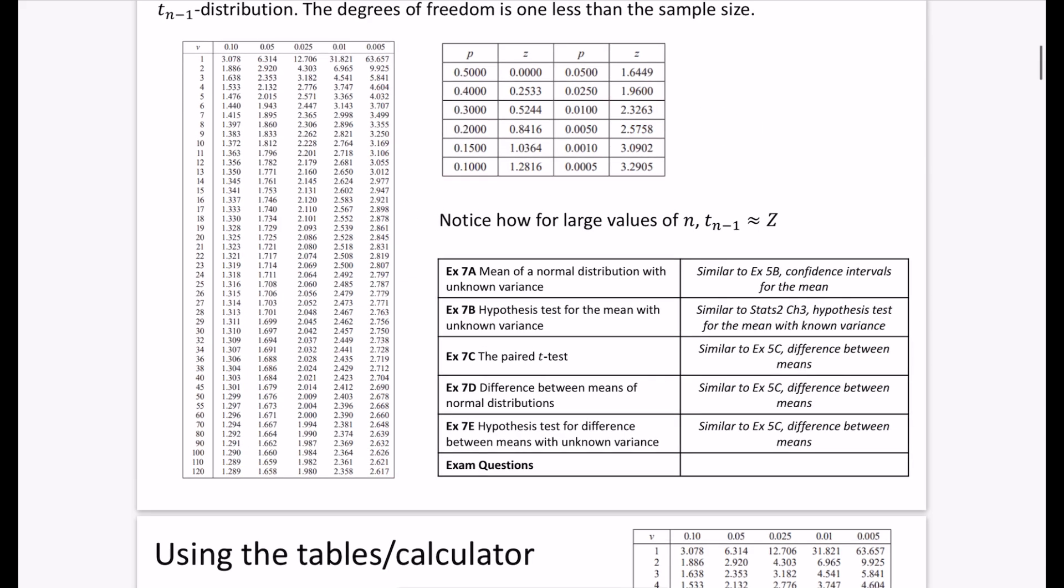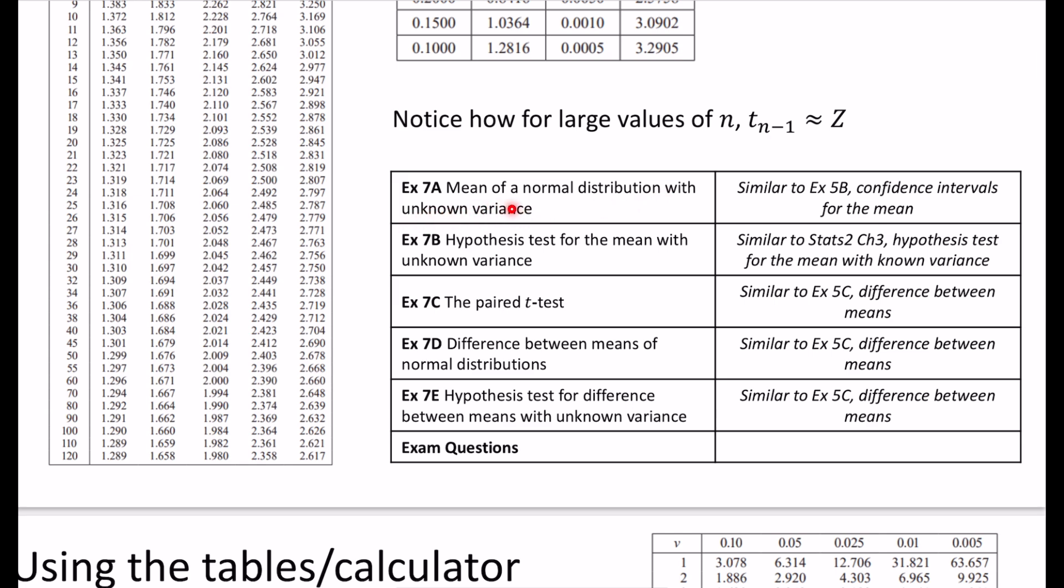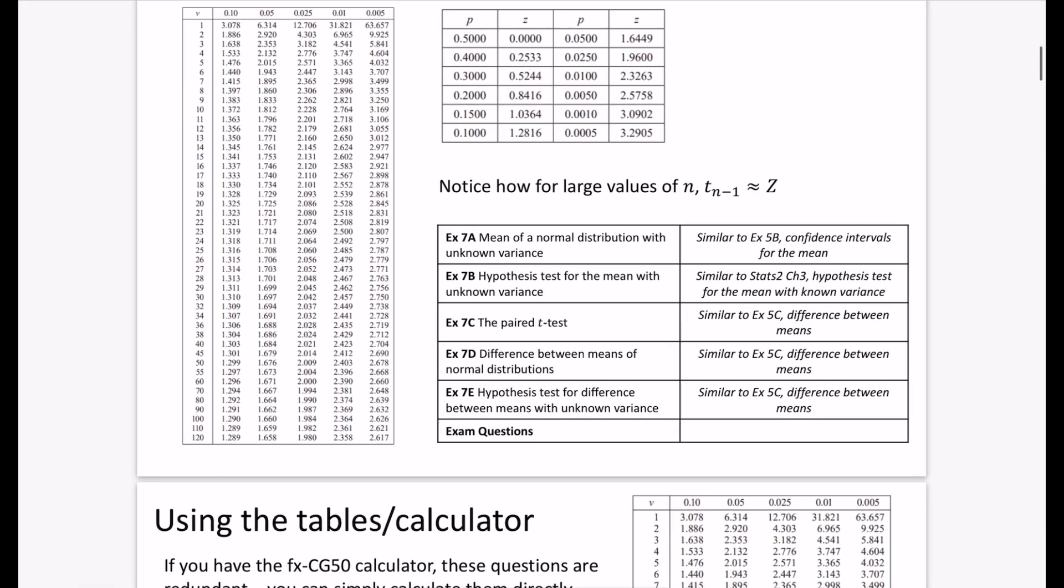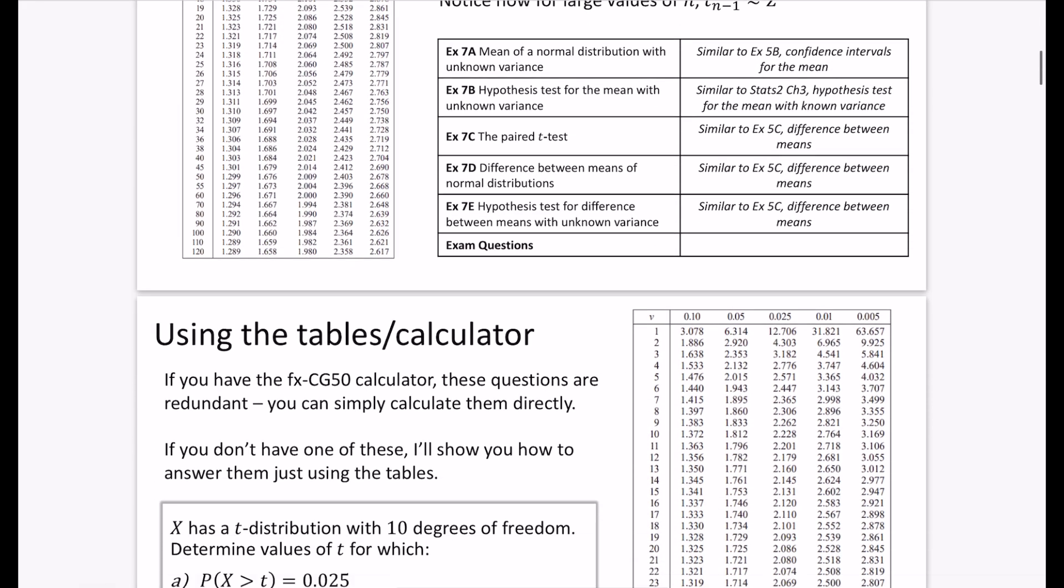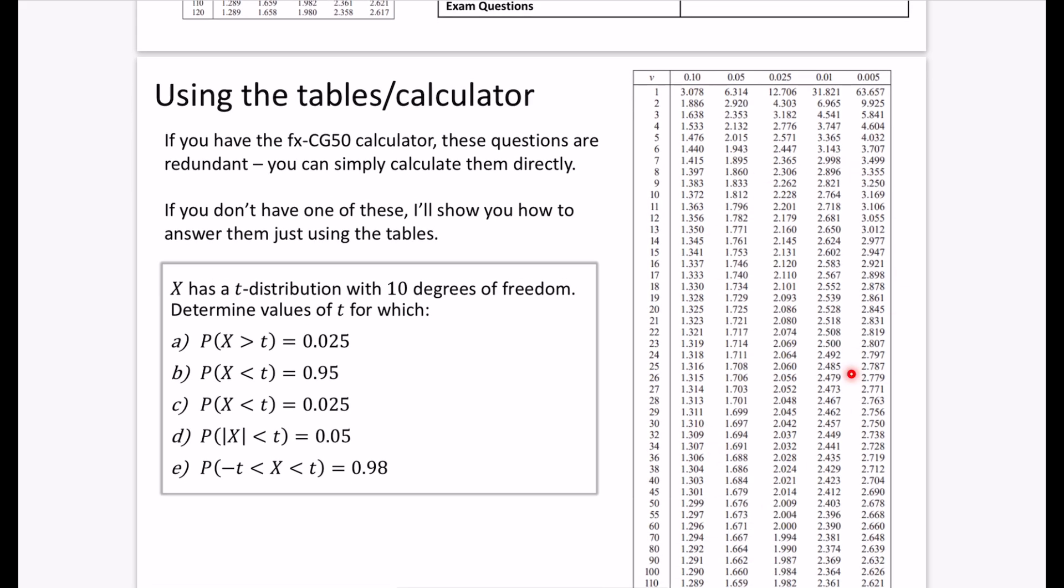Let's think about all the things we're going to be doing in this final chapter. We have the mean of a normal distribution with unknown variance. This is going to feel really similar to exercise 5b when we're doing stuff like confidence intervals for the mean. We'll be doing hypothesis testing for the mean with an unknown variance. We'll then do something called the paired t-test. This is basically like the difference between means. We'll do hypothesis testing for the difference between means. And then at the end, I will do a big summary of all of Further Stats 2's distributions. If you come back in the next video, we're going to be starting to think, how do we use this table? How do we use our calculators to figure out all of these t-values and probabilities?